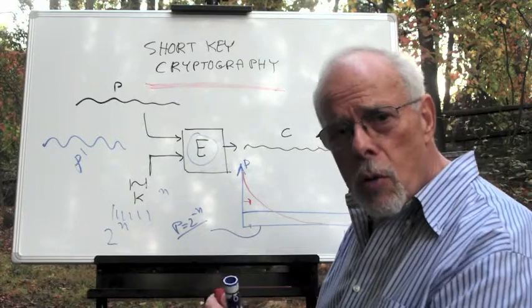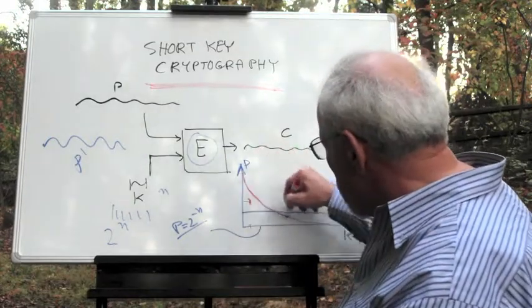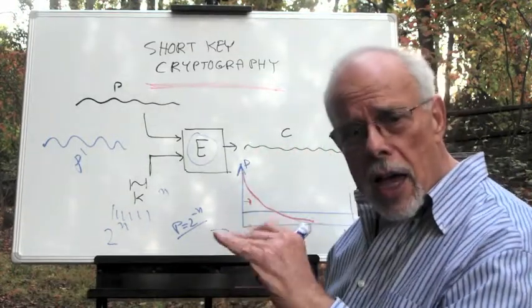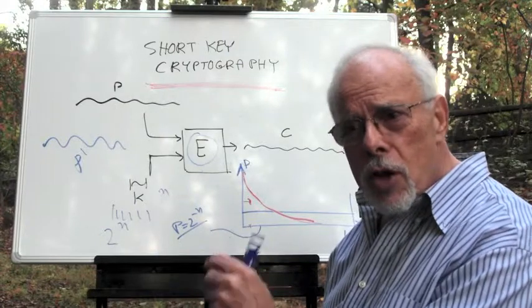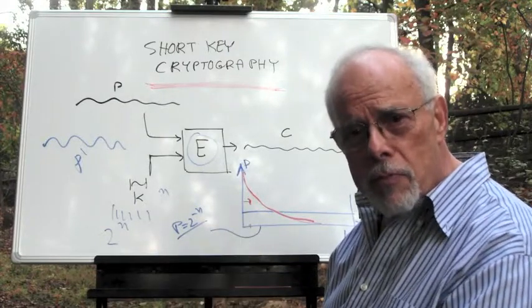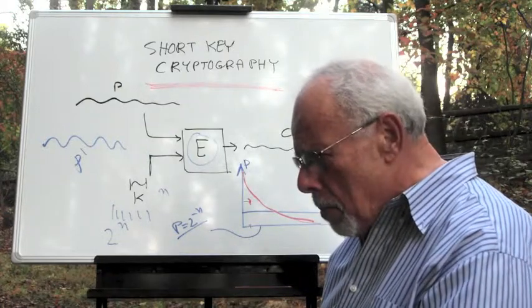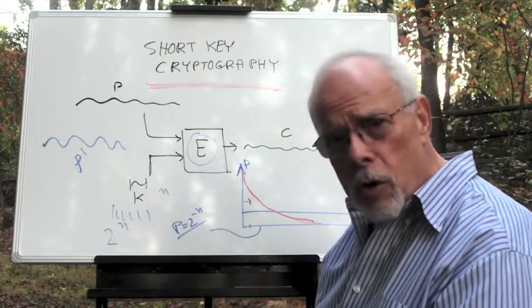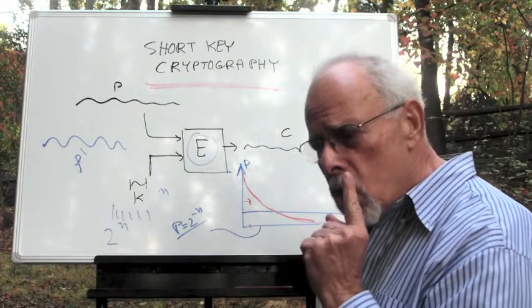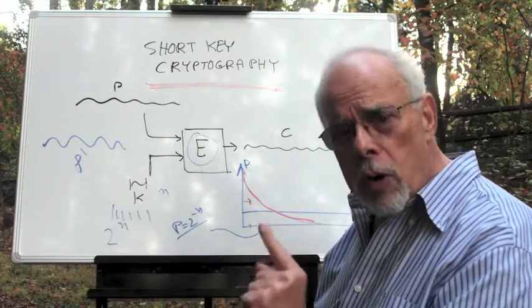And you never know if such a probability curve serves the adversary. So that's the main point of short key cryptography. It commits to a single key. There is no equivocation.